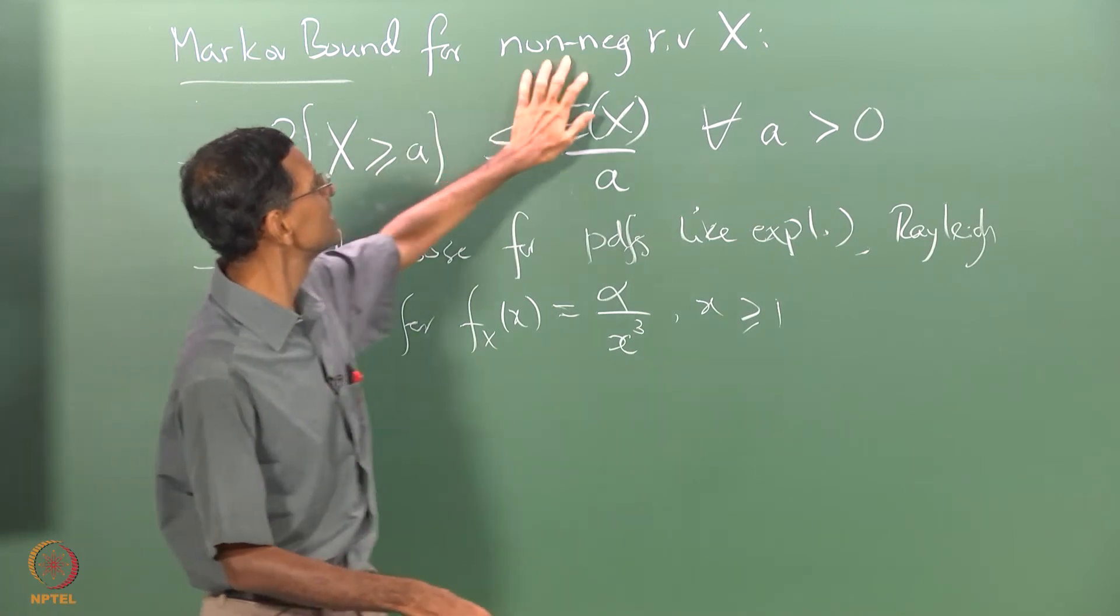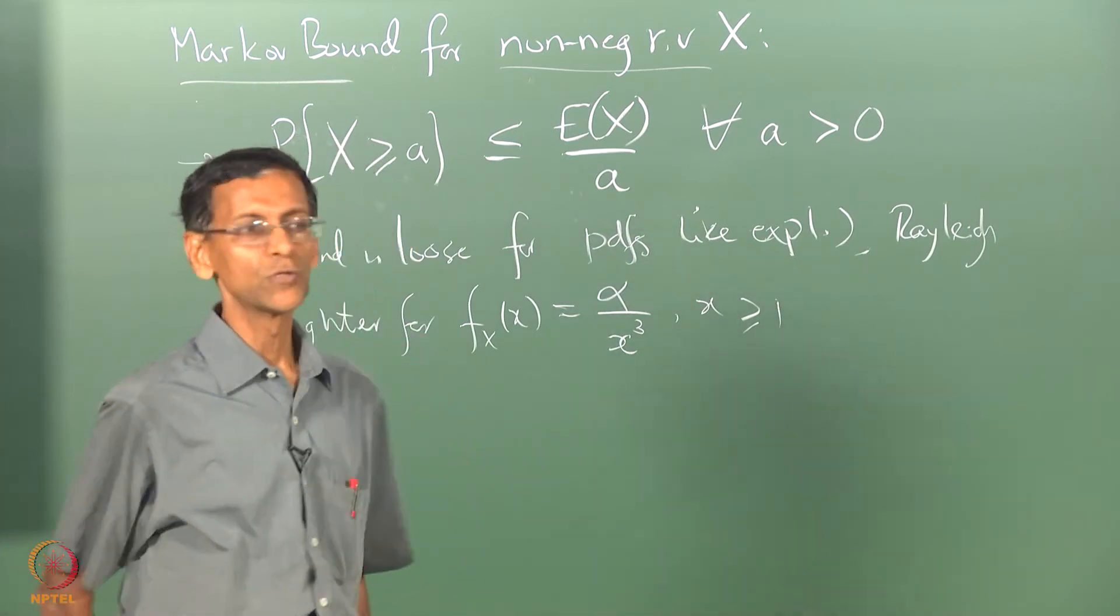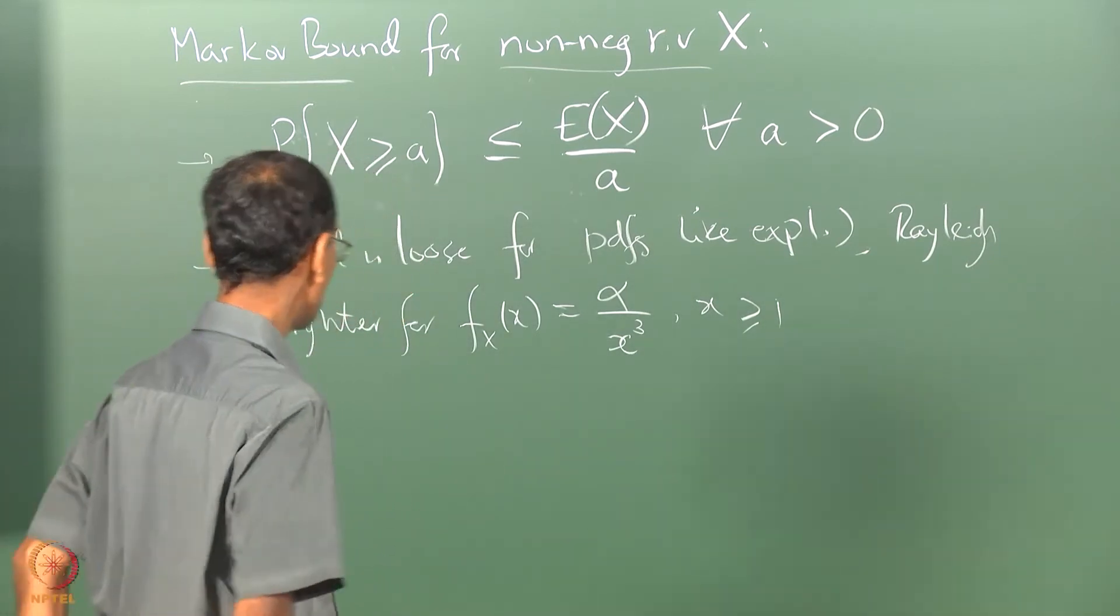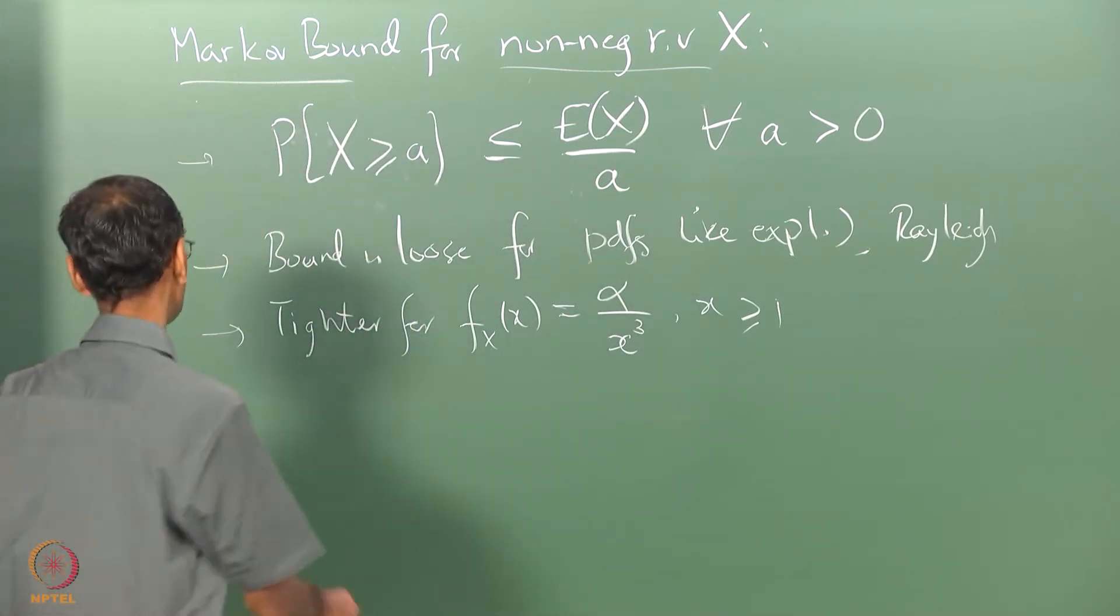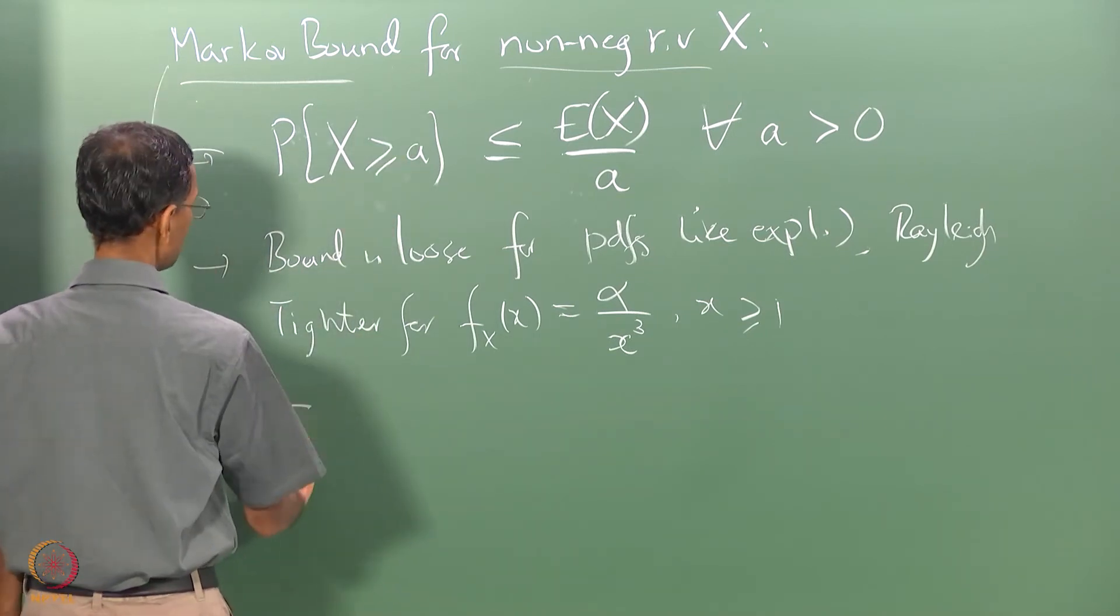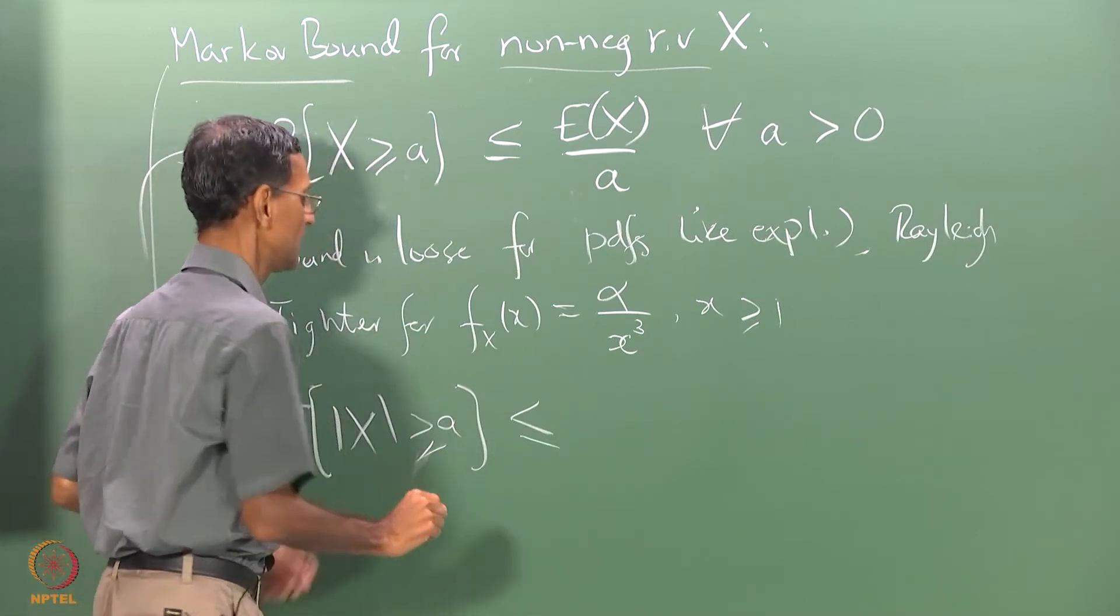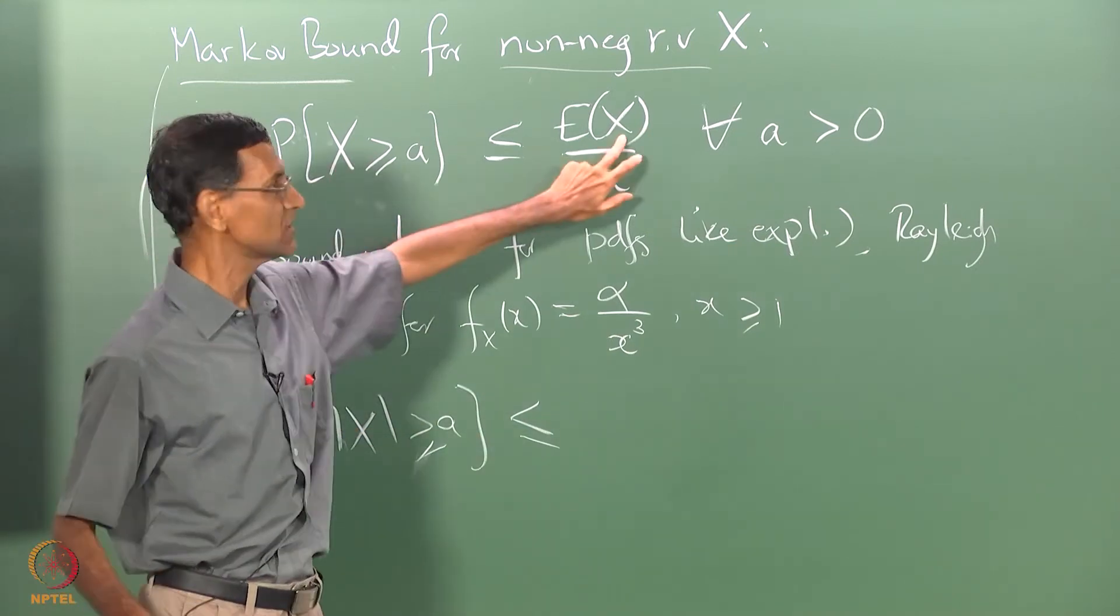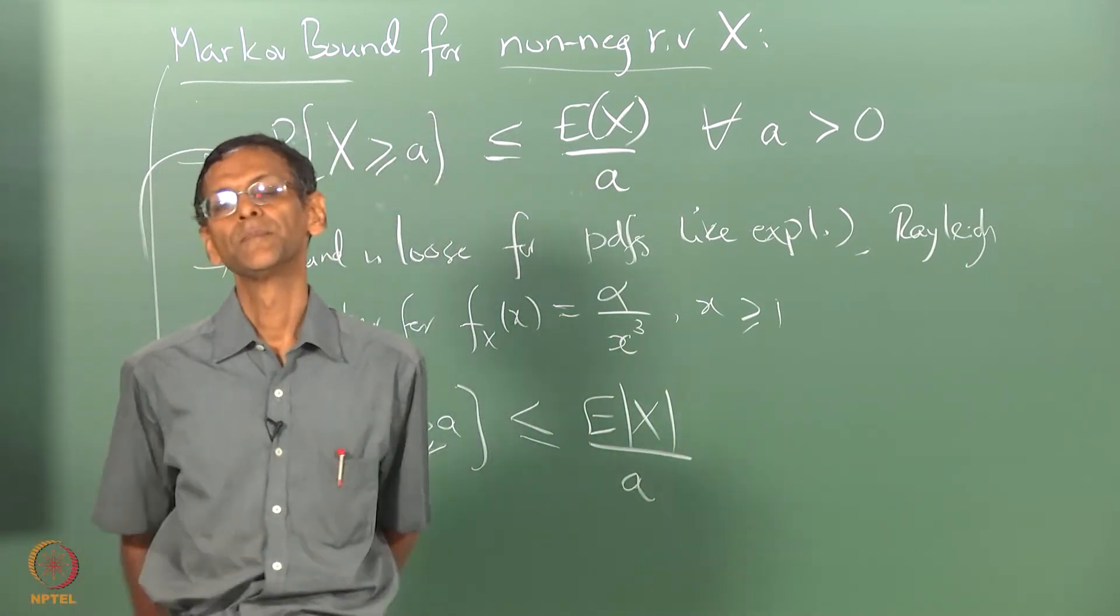So now you might think is this restriction of non-negative random variable very strong? Actually, it is not because you can look at mod x for any random variable x, mod x is non-negative. So if E of x exists means E of mod x also has to exist. So therefore, another statement you can make directly from here itself is that probability of mod x bigger than A is going to be upper bounded by what? This is a non-negative random variable. So what is this going to be upper bounded by? All I have to do is substitute the same mod x here.